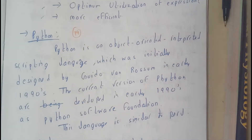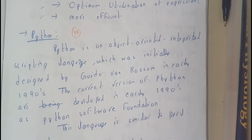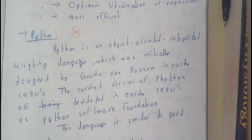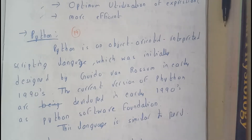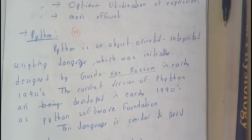Hello guys, we are back with our next tutorial. In this tutorial let us go through the introduction of Python. We will be going through a few characteristics of Python. Python is an object-oriented programming language and it is also a scripting language, which was initially designed by Van Rossum in the early 1990s. This is one of the most popular languages.